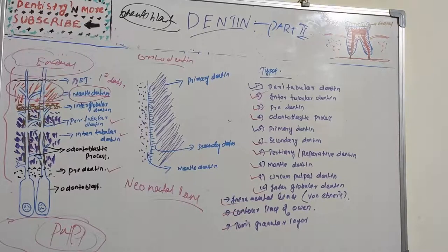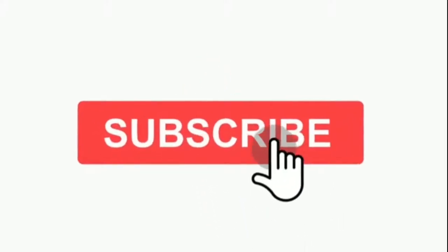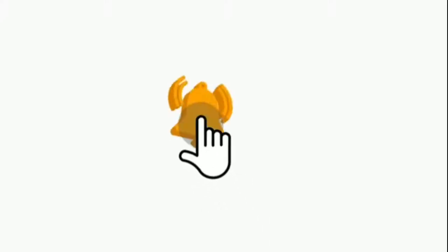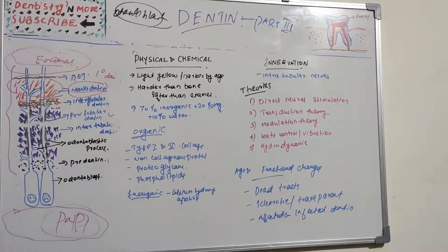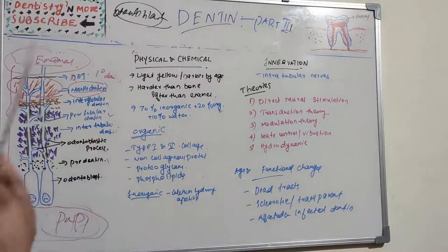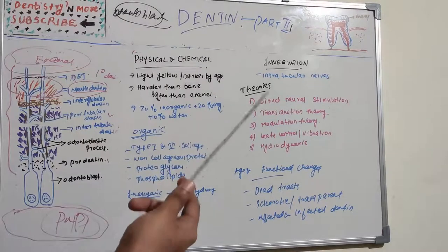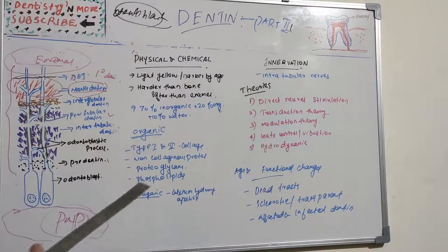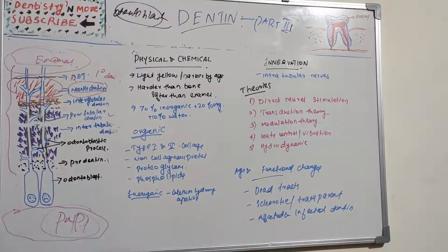Hello everyone, let's continue our sessions on dentine. This third part covers physical and chemical properties, organic and inorganic content of dentine, the various theories of innervation, and the functional changes with age — including dead tracks, sclerotic or transparent dentine, and affected and infected dentine.